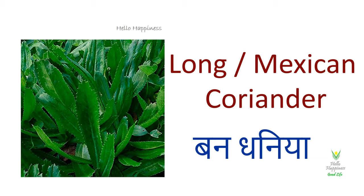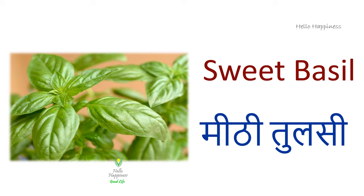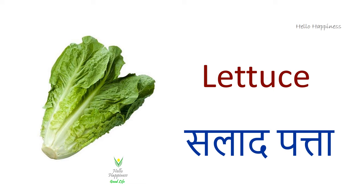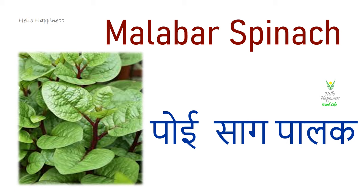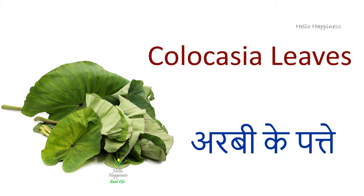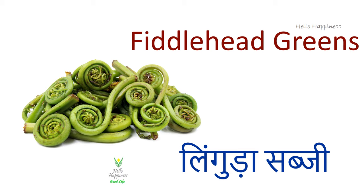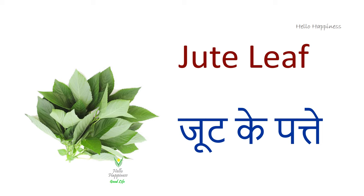Long or Mexican coriander — Ban dhaniya. Sweet basil — Meethi tulsi. Lettuce — Salat ke patte. Malabar spinach — Poi sa Palak. Colocasia leaves — Arabi ke patte. Fiddle head greens — Lingoda sabji. Jute leaf — Jute ke patte.